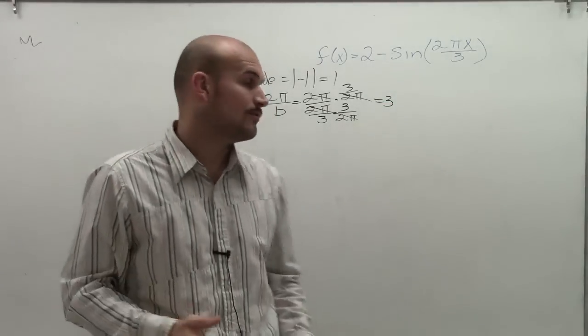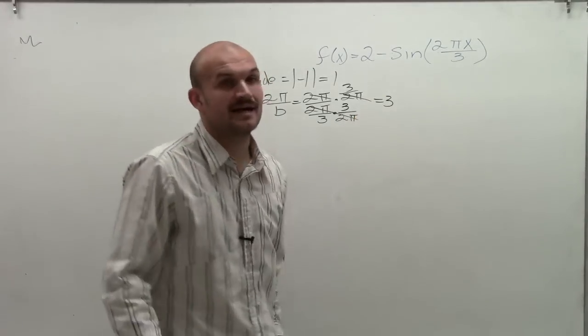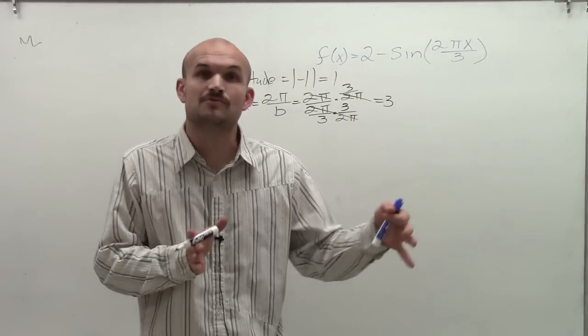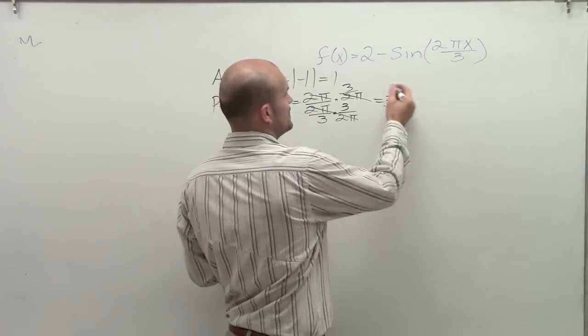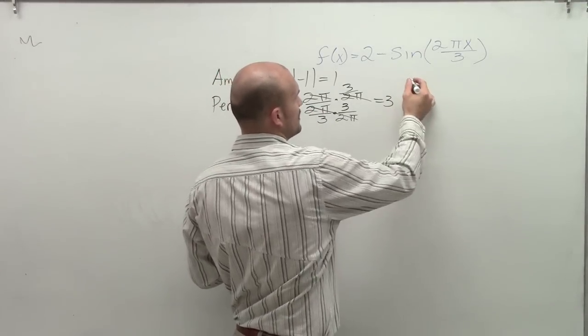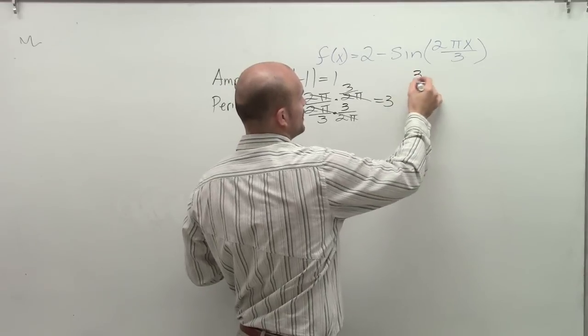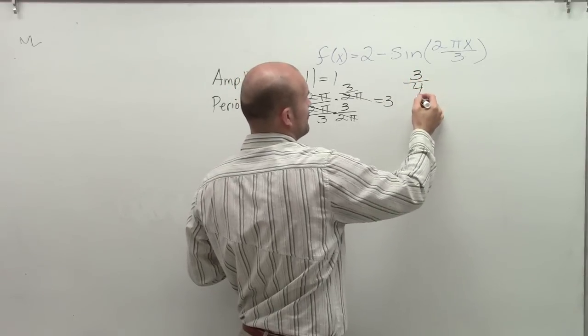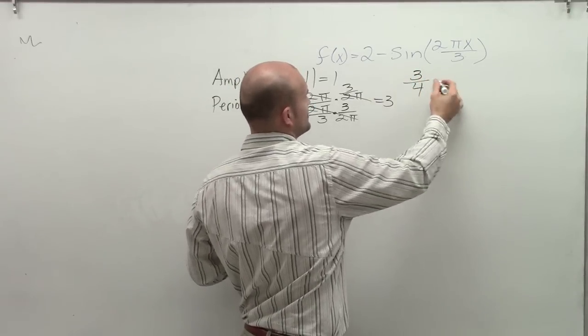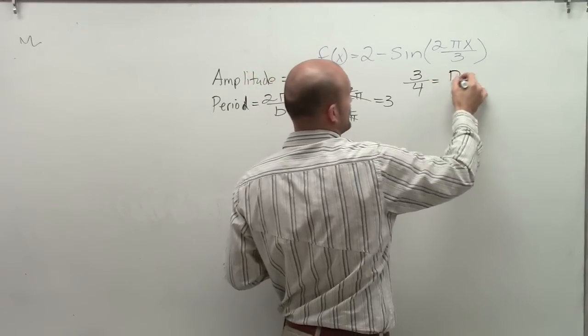Now the next thing I'm going to want to do is make sure I find the critical distance between each one of those points. Remember, we have four critical points. So the distance between my four critical points is what I'm going to do is I'm going to take my period and then divide it by 4. So that's going to be the distance between my critical points.